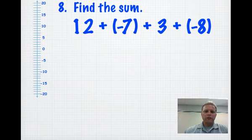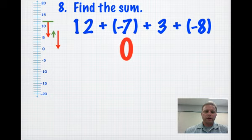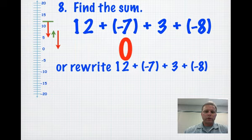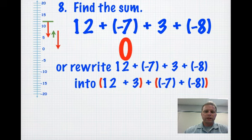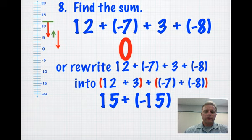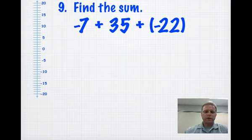Number 8: 12 plus negative 7 plus 3 plus negative 8. Start out at 12. Go down 7. You can then go back up 3. Down 8. And you end up at 0. Another way that's helpful to do it is to rewrite it. So if we put the positives together and the negatives together, we have 15 positives and 15 negatives. And you end up with 0.